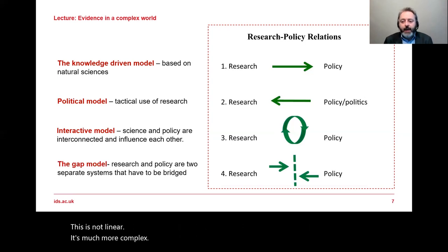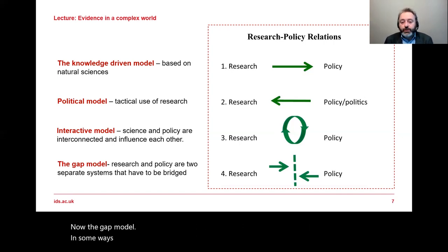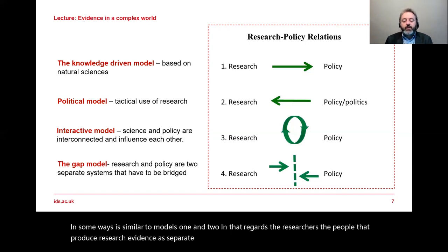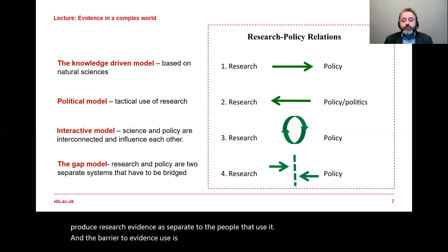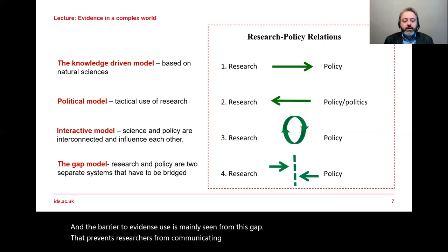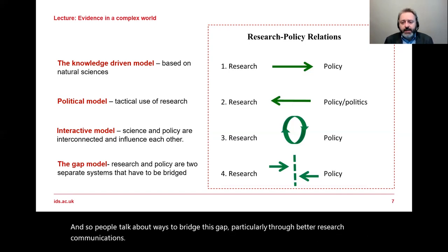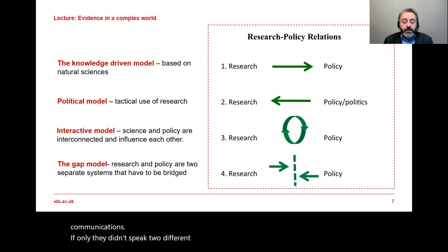And finally, we have the gap model. The gap model regards researchers — the people that produce research evidence — as separate to the people that use it. The barrier to evidence use is mainly seen as the gap that prevents researchers from communicating effectively with research users. People talk about ways to bridge this gap, particularly through better research communications: if only they didn't speak two different languages and belong to two separate sectors, more evidence and research would get into use.